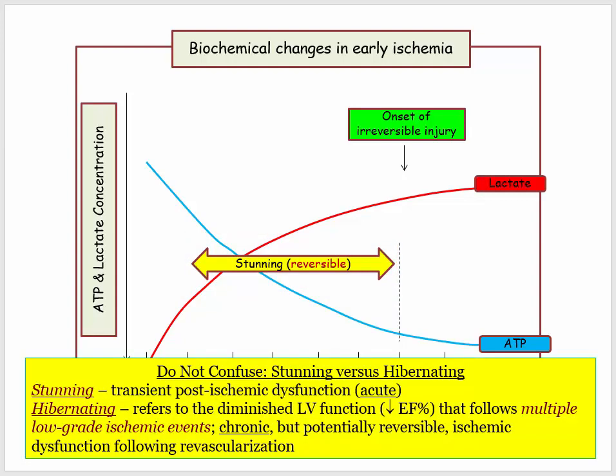It is worth highlighting the difference between stunning and hibernation. Stunning refers to reversible ischemic injury following acute or subacute occlusion. Hibernating myocardium refers to decreased LV function as a result of recurrent low-grade ischemic events. The EF may be reduced as the left ventricle is literally in sleep mode, but following revascularization, impaired LV function may normalize. This phenomenon is referred to as myocardial hibernation. This is low yield for Step 1, but it is easy to see how students confuse stunning versus hibernation.